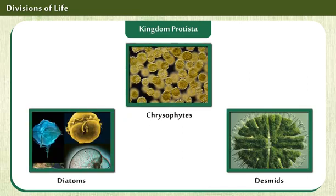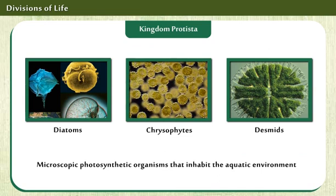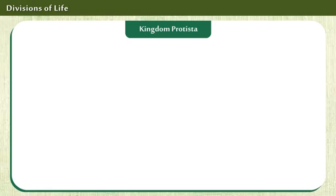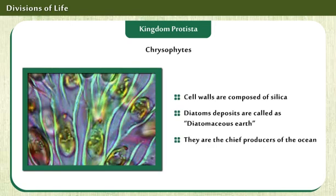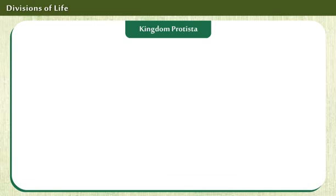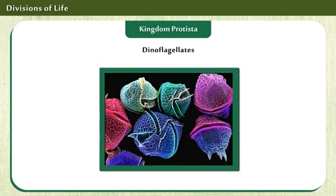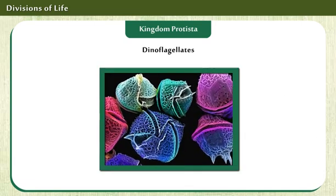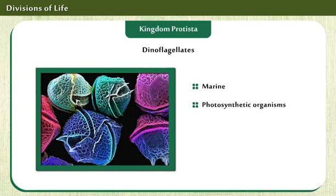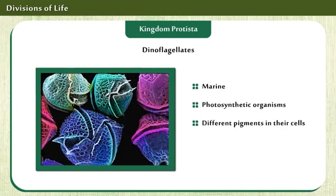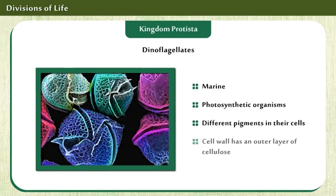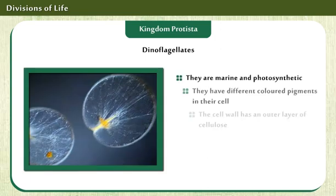Chrysophytes are microscopic photosynthetic organisms that inhabit the aquatic environment. Dinoflagellates are also classified under Kingdom Protista. They are marine and photosynthetic organisms with different colored pigments in their cells. Their cell wall has an outer layer of cellulose. Some of their features are displayed on the screen.